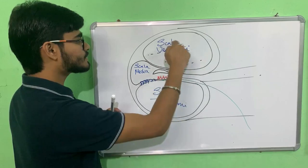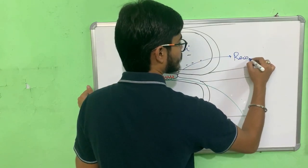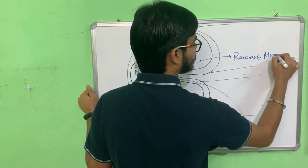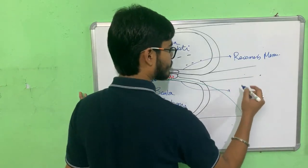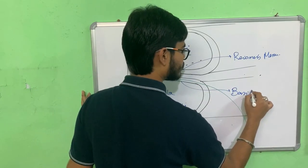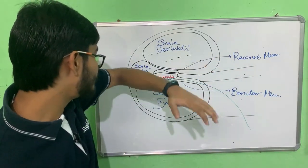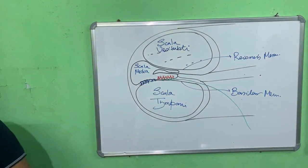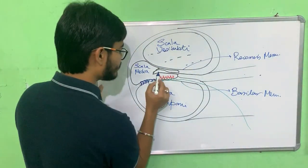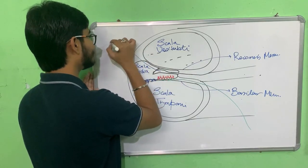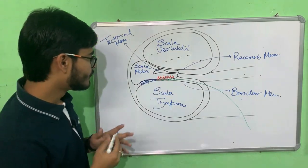The base of the scala vestibuli is known as Reissner's membrane. The membrane above the scala tympani is known as the basilar membrane. In the middle layer — the scala media — there is an umbrella-like structure present throughout the canal known as the tectorial membrane.